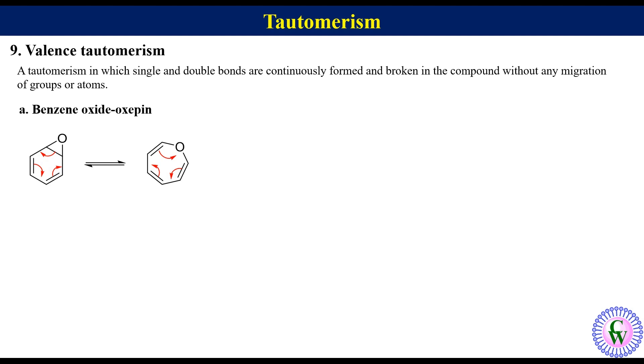Second example is homotropylidene. It undergoes Cope rearrangement like this to produce equivalent structure. If there is substitution, then the two structures will be different compounds. For example, if the two methylene hydrogens of three-membered ring in the left side compound are replaced by deuterium, then the right side compound will have deuterated methylene group in the seven-membered ring. Thus, we can see that these two tautomers are different compounds.